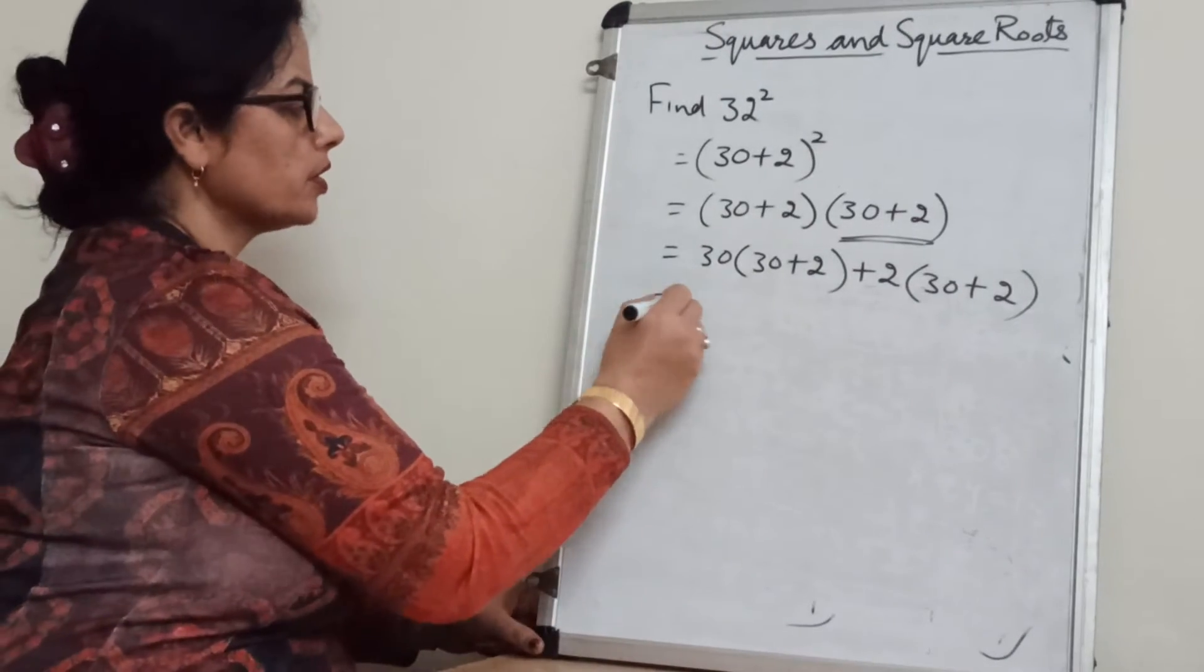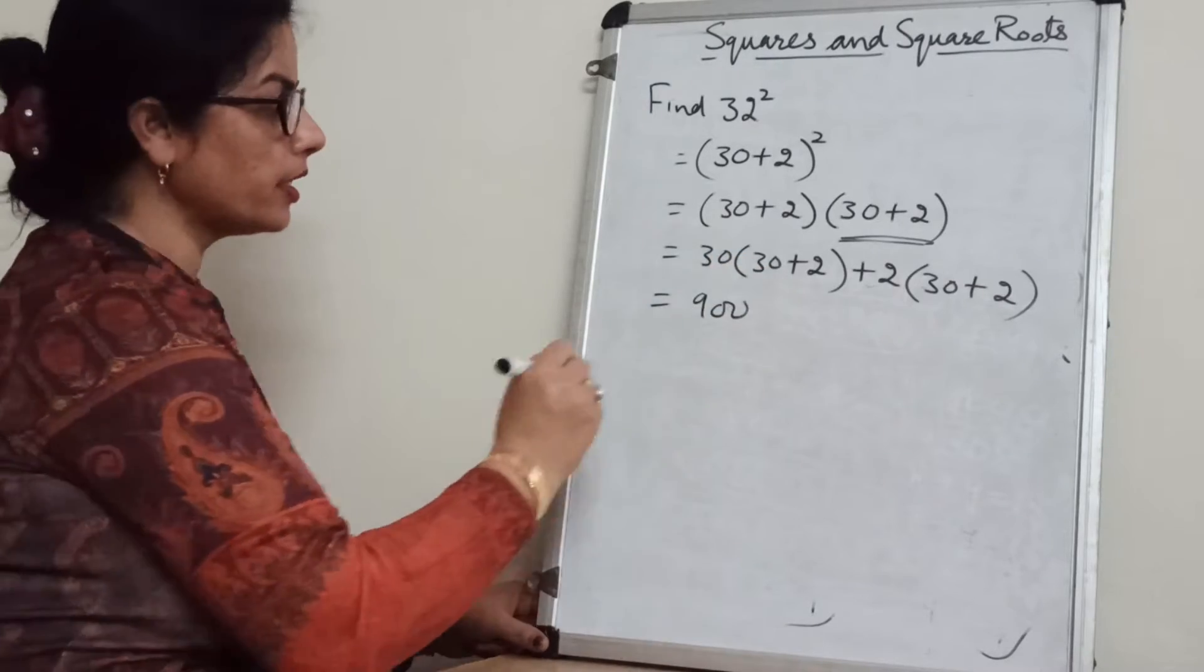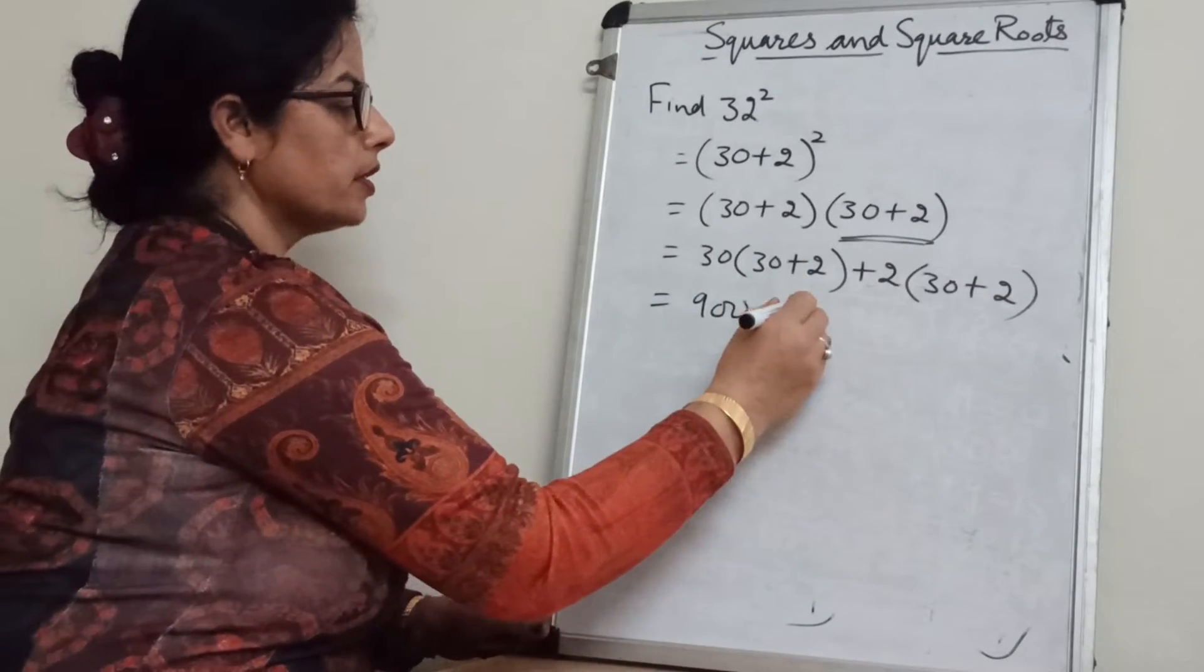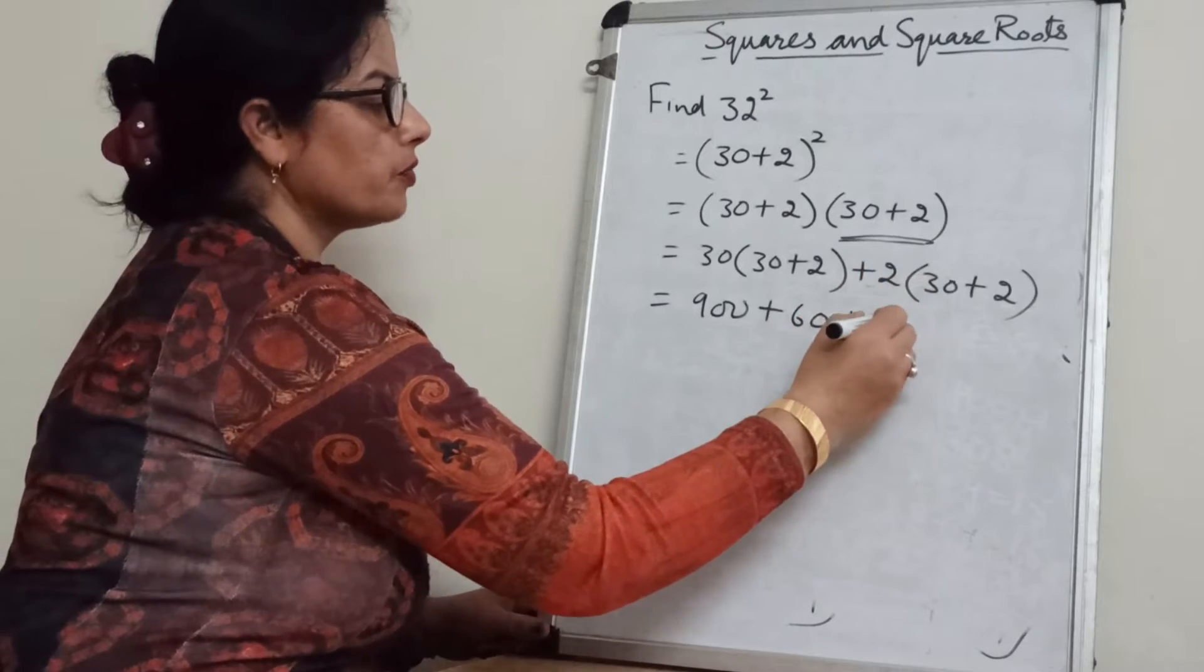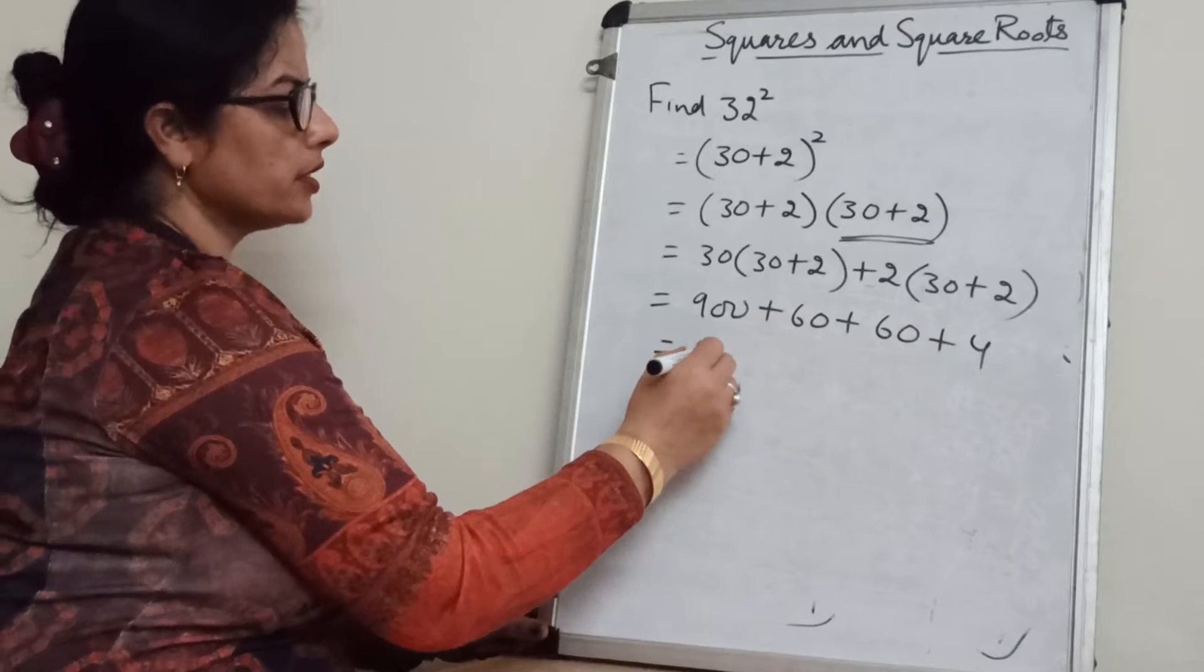And now open the bracket. 30 into 30, 900. 3 into 9, 2, 0 will be there. 30 into 2 is 60. 30 into 2 is 60. 2 into 2 is 4. And now add this.